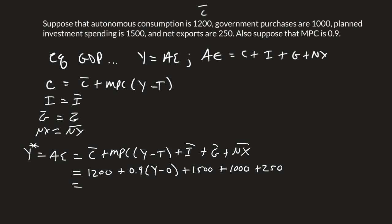I'm going to go ahead and combine my $1,200, my $1,500, my $1,000, and my $250. This gets us $3,950 plus 0.9 times Y.